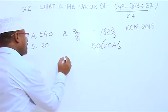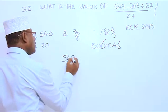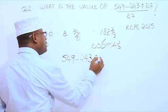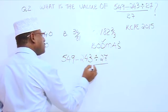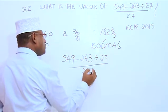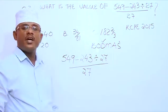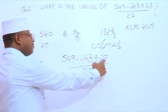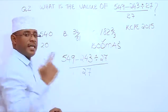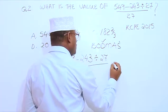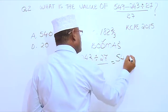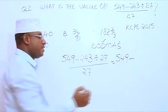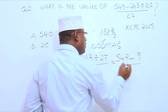549 minus 243 divided by 27 over 27. Now, what is 243 divided by 27? 9. 27 goes into 243 nine times. So we are going to have 549 minus 243 divided by 27 is 9 over 27.